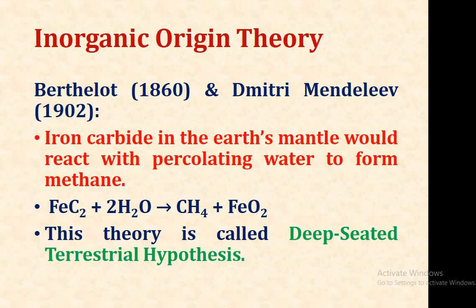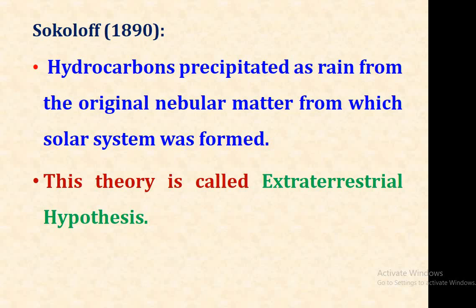As the iron carbide reacts with water to form methane, this theory is called the deep-seated terrestrial hypothesis. In 1890, Sokolov stated that hydrocarbons precipitated as rain from the original mineral matter from which the solar system was formed, and this theory is called the extraterrestrial hypothesis.